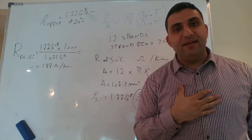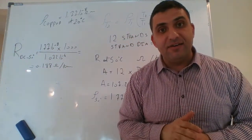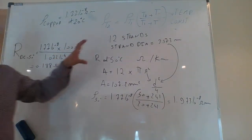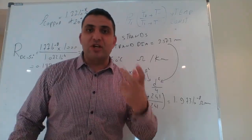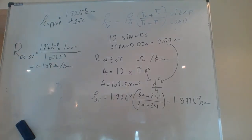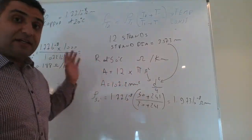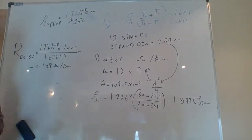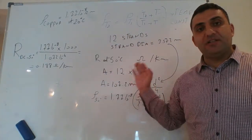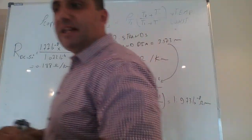It is worth noting that R_dc and R_ac are almost identical — the difference can be neglected. Under AC conditions at 50 Hz, which is not a very high frequency, it is acceptable to consider R_dc as essentially the same as R_ac. The alternating current resistance is very close to the DC resistance at power frequency.